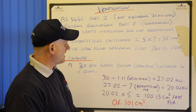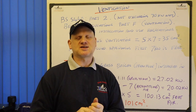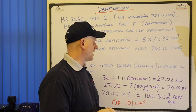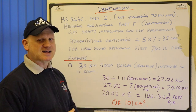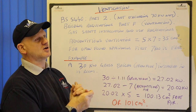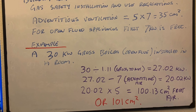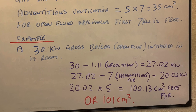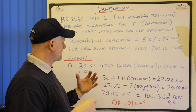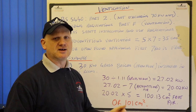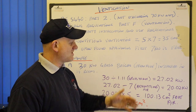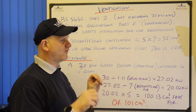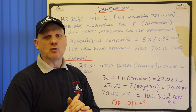So for open flued appliances the first 7 kilowatts is free. We'll look at the others later. So let's have an example — we've got a 30 kilowatt gross boiler, open flued, installed in a room. That question is telling you: 1) what the kilowatts is and whether it's gross or net, 2) where it's installed, and 3) what type of appliance it is. From that description we can work out what we need.